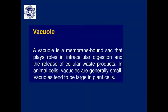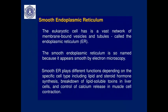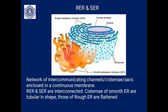Another important cytoplasmic organelle is the endoplasmic reticulum. Smooth endoplasmic reticulum (SER) and rough endoplasmic reticulum (RER) are networking, intercommunicating channels, cisternae, or sacs enclosed in continuous membranes. RER and SER are interconnected. The difference is that SER is tubular in shape, while RER is more flattened and embedded with ribosomes. RER is responsible for protein synthesis, whereas SER is responsible for lipid synthesis.